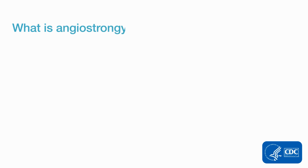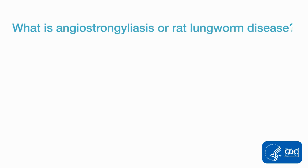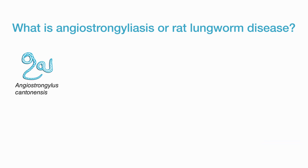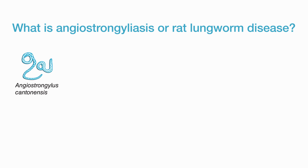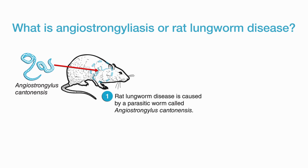What is angiostrongyliasis, or rat lungworm disease? Rat lungworm disease is caused by a parasitic worm called Angiostrongylus cantonensis. It's called rat lungworm disease because the worm lives in the lungs of rats.